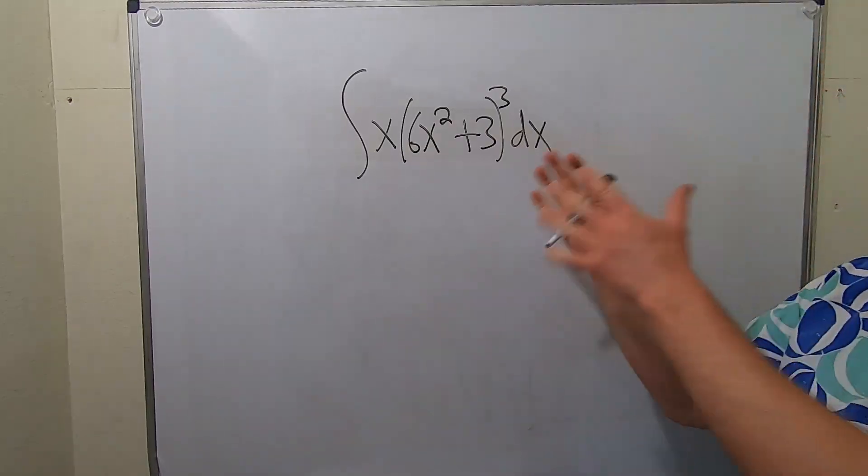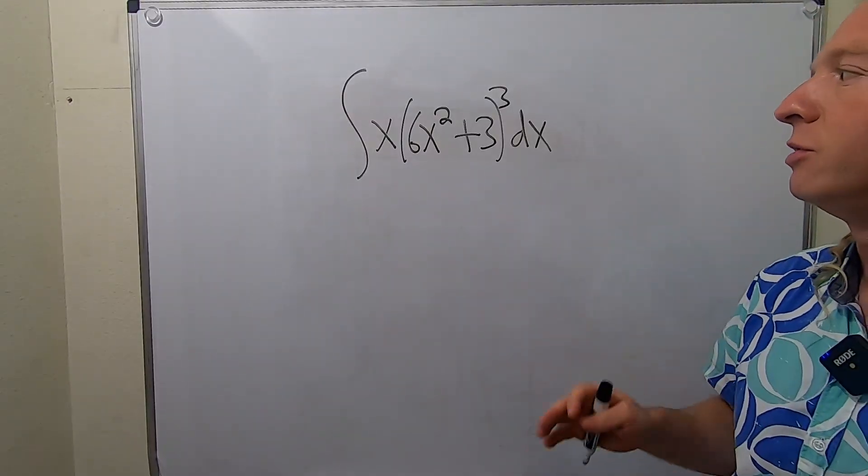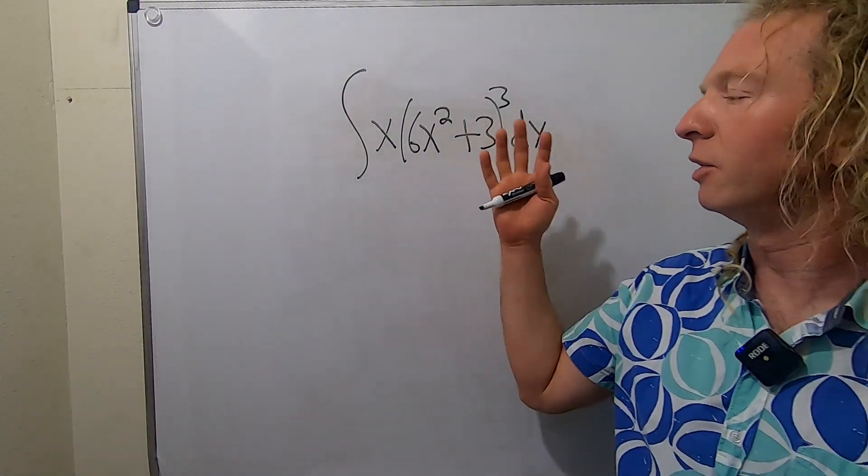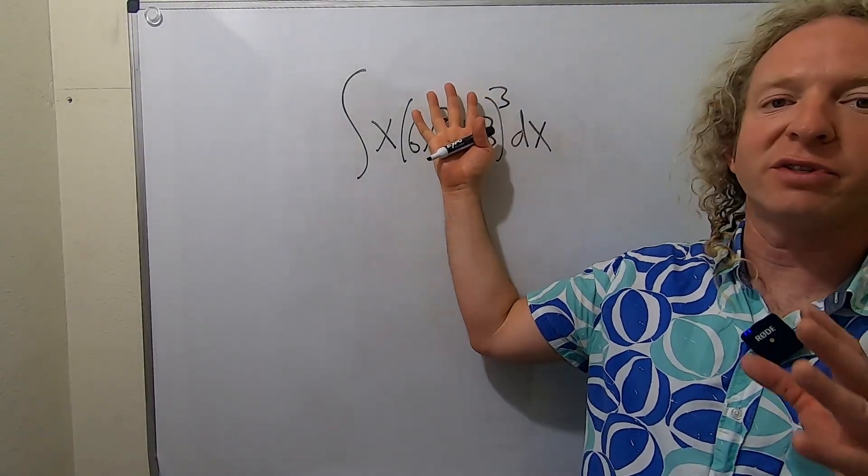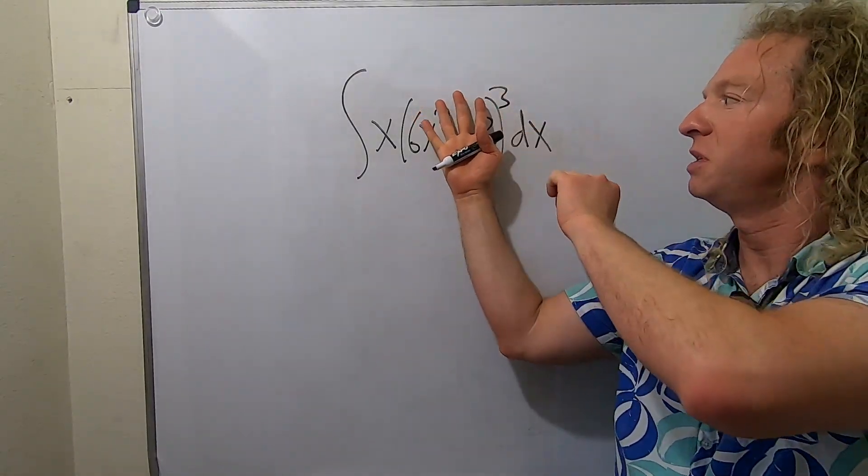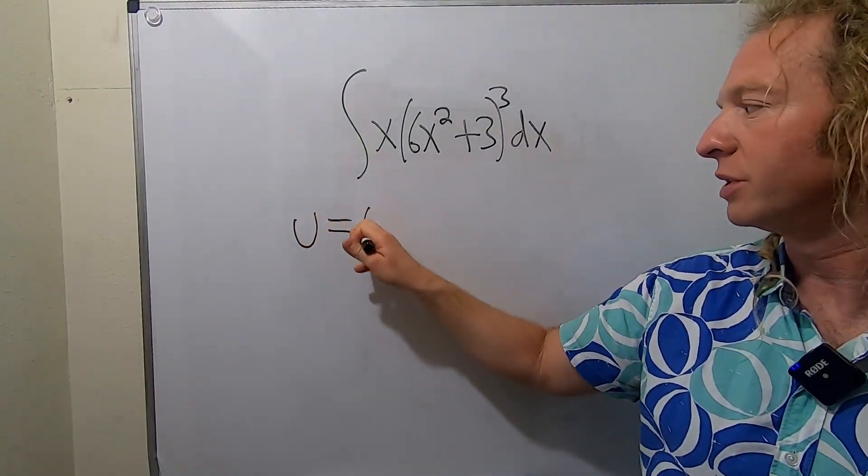Hi everyone, in this video we're going to integrate this using a technique called u-substitution. To use u-substitution, you start by letting u be your inside piece. So the obvious choice here is whatever's inside this power. This piece here is going to be our u, so you let u equal 6x squared plus 3.